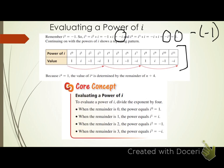Looking at the chart, we see a pattern: i to the zero is 1, i to the first is i, i squared is negative 1, i cubed is negative i, and when we get to i to the fourth, the pattern starts over: 1, i, negative 1, negative i. It repeats every four terms. Because i to the fourth equals 1, the value of i to the n is determined by the remainder of the exponent divided by 4. To evaluate a power of i, divide the exponent by 4. Remainder 0 gives 1, remainder 1 gives i, remainder 2 gives negative 1, and remainder 3 gives negative i.